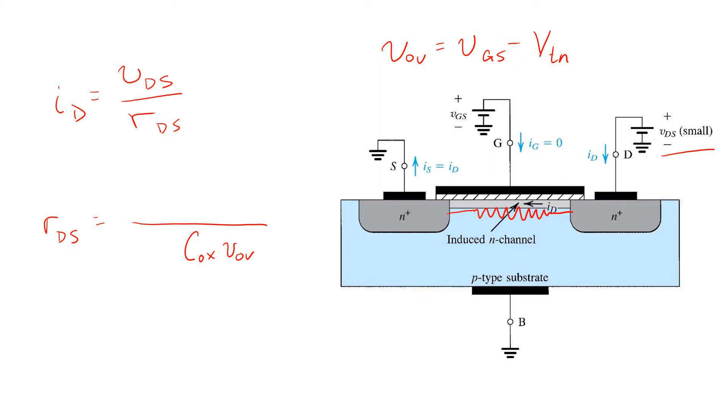Furthermore, if we recognize that the channel region is a resistor like any other, it's not surprising that its resistance is proportional to its length L and inversely proportional to its width, which is the dimension into the screen in this cross-section.